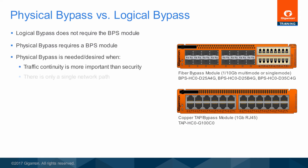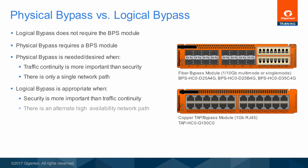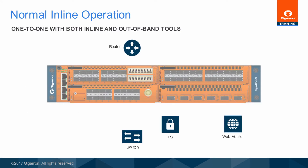If the continued operation of a production link is of utmost importance, then a physical bypass solution is needed. When security is more important than keeping the production link operating, then the logical bypass is a good option and requires no custom hardware. Under routine operation, traffic enters a physical bypass switch and is then forwarded over to the inline tool. The inline tool performs its normal allow-deny inspection process and approved traffic is sent back and on into the network. This forwarding and inspection occurs bidirectionally, which is one of the major differences between inline monitoring and out-of-band monitoring.